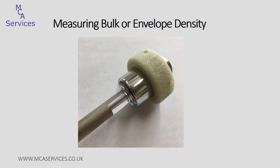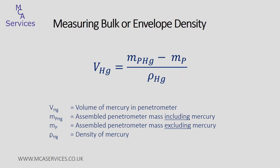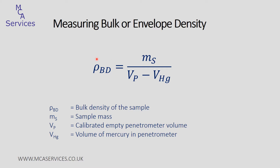We'll quickly run through the calculations that are applied — and bear in mind that all of this is shown within our mercury porosimetry videos. The first thing to be calculated is the volume of mercury within the penetrometer. To do that we subtract the mass of the assembled penetrometer without mercury from the mass of the assembled penetrometer with mercury — that's the mass before and after low pressure analysis — and that's divided by the density of mercury at the analysis temperature. We then calculate the bulk density by dividing the sample mass by the displacement volume of the sample. The displacement volume is calculated by subtracting the volume of mercury at the end of the low pressure analysis from the calibrated penetrometer volume. So essentially it's just sample mass over sample volume.